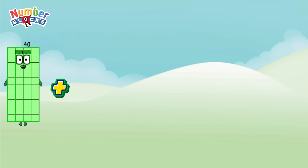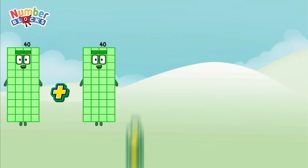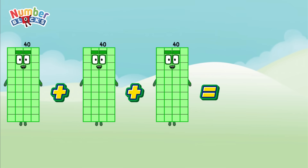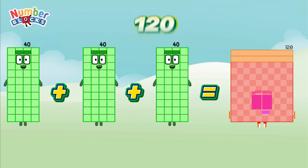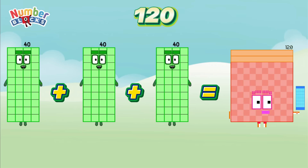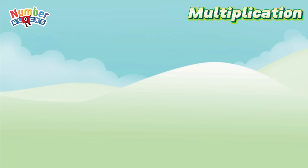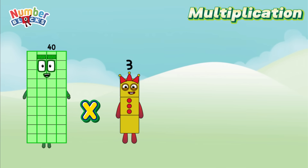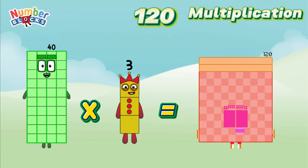40 plus 40 plus 40 is equals to 120. Multiplication: 40 multiplied by 3 is equals to 120.